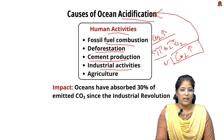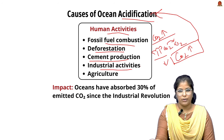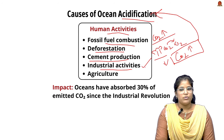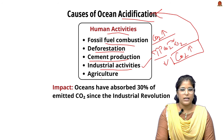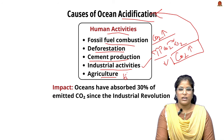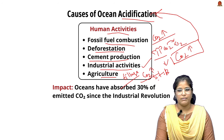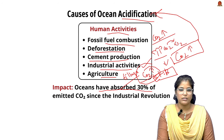Third is cement production, the highest CO2-emitting industrial activity. Fourth are heavy industries like smelting ore into metal, which emit large amounts of CO2. Fifth is agriculture — practices like tillage and stubble burning, which is a significant issue in India, also increase CO2 emissions.